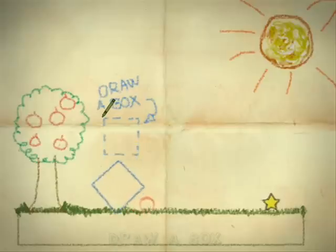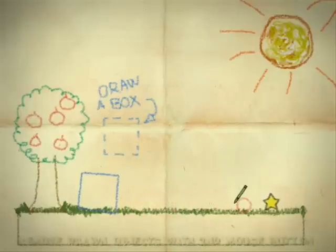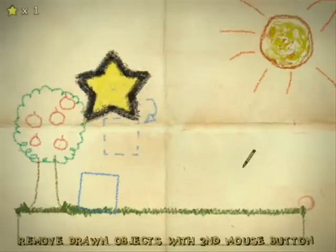The game starts off simply. The first star is on a flat opposite your ball, and you just draw a box that falls onto your ball to propel it forward.